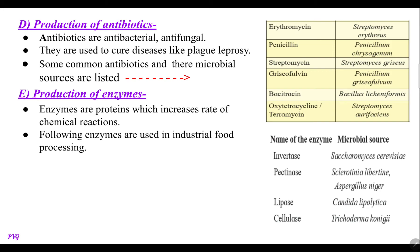Production of enzymes: a number of enzymes are prepared using microbial sources. These enzymes are protein in nature and they accelerate the rate of reaction. There are some enzymes used in industrial food processing, shown in tabulated form. For example, the enzyme invertase is formed by the microbial source Saccharomyces cerevisiae; pectinase by Sclerotinia libertiana or Aspergillus niger; lipase by Candida; and cellulase by Trichoderma.